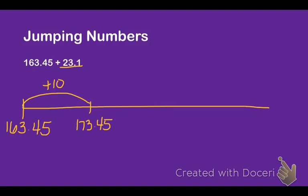Now, I'm not quite at 23 because, remember, the point is to get to 23.1. I only added 10. So from there, I'm going to add 10 more. Now, I'm at 183.45. So now I've added 10 and 10, so that makes 20.